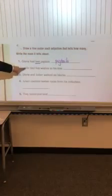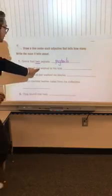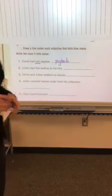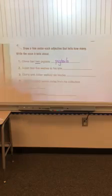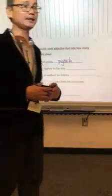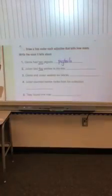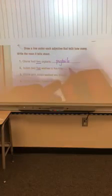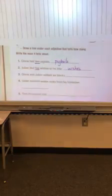Okay, number two. Julian tied five wishes to his kite. Which one is adjective? Five. So underline the word five, because five is a number and number is special adjective that tells how many. Right? And which one is the noun? Wishes. So five wishes, we write wishes here. So he has five wishes that tells more about wishes.